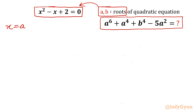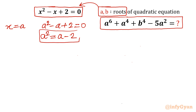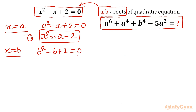Putting x equal to a gives a² minus a plus 2 equal to 0, so a² equals a minus 2. This is equation number 1. Putting x equal to b gives b² minus b plus 2 equal to 0, so b² equals b minus 2. This is equation number 2, and we will use both of these.